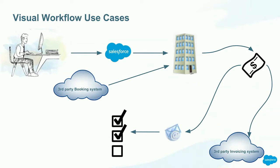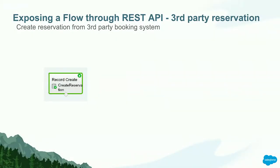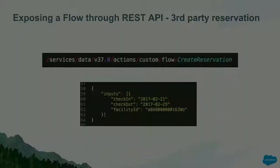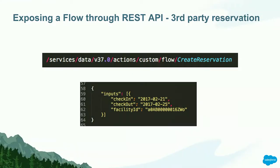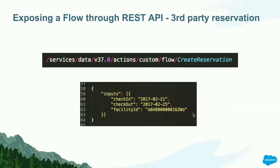Finally, we have a last use case in which we want to expose to a third-party booking system a way to create reservations in our organization. We create a simple flow that allows reservation creation and set it as an auto-launch flow. If you do that, an endpoint is automatically created for you in the REST API. So we are exposing this flow to the third-party system so they can make REST API calls to our endpoint, passing the information we need in JSON format to create reservations in our application.